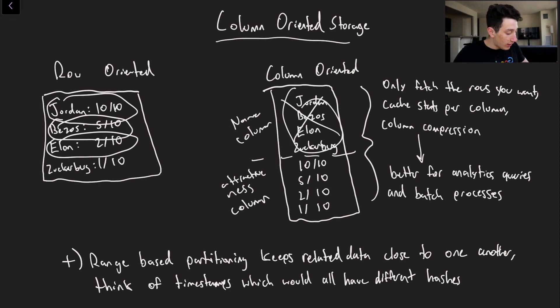Instead of having to pull in all of that name data, we can cancel that out, just pull in the attractiveness data, and then say oh well it's 10 plus 5 plus 2 plus 1 over 4, which is 18 over 4, which is 4.5. Whatever it doesn't really matter.